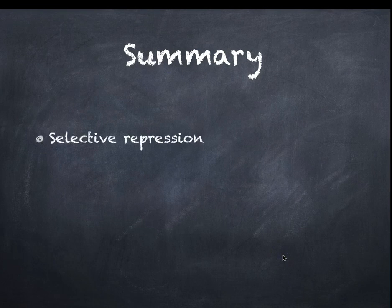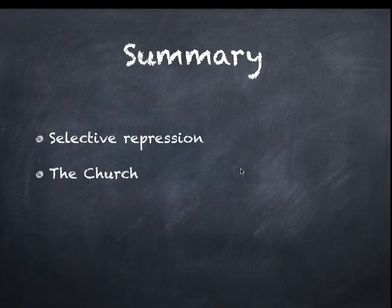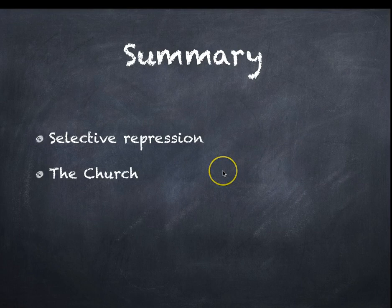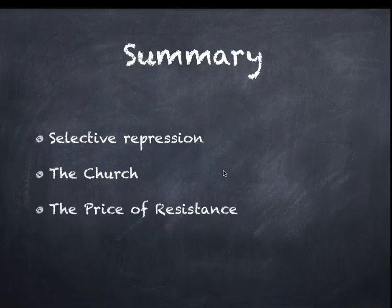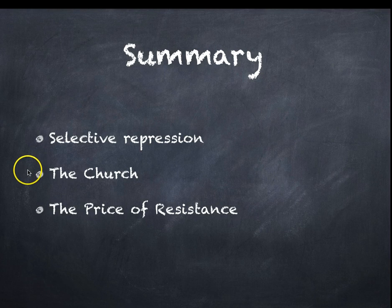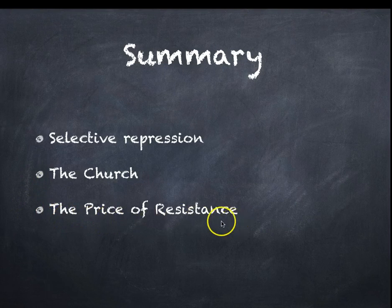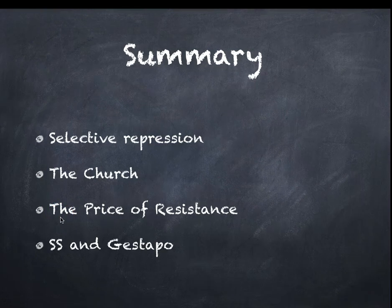In summary: selective repression — certain groups, such as the industrial elite and rich bankers, were not repressed as they were valuable to Hitler. The Church initially signed an agreement with Hitler under the Concordat, but the Nazis broke that agreement and more and more priests and pastors were imprisoned. The Nazis never closed the churches, though — that would have been too risky, and it questions how truly totalitarian the regime actually was. The price of resistance included concentration camps and the death penalty, enforced by the SS and Gestapo.